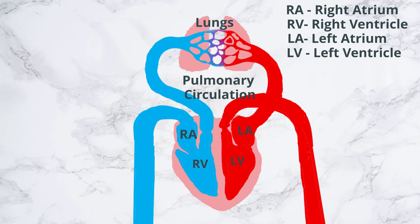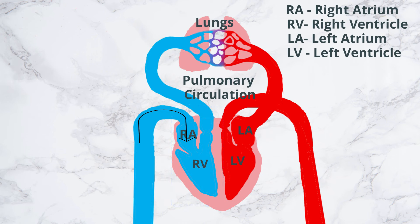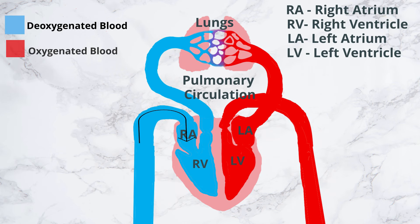Pulmonary circulation — where 'pulmon' stands for lung. The right side of the heart is the pump for the pulmonary circulation. It receives all the dark red deoxygenated blood returning from the systemic circulation. For your understanding, the deoxygenated blood is represented in blue color. The blood pumped by the right ventricle enters the pulmonary trunk and branches into the right and left pulmonary artery.